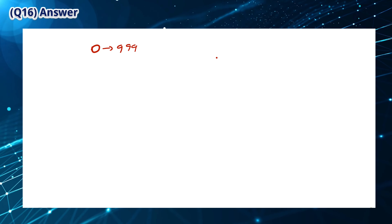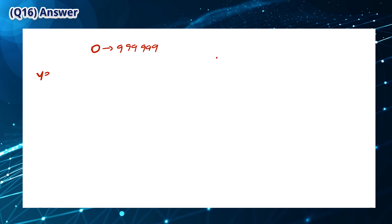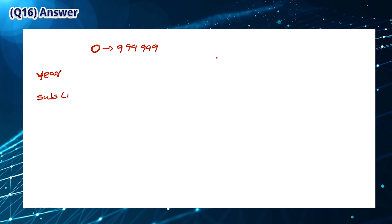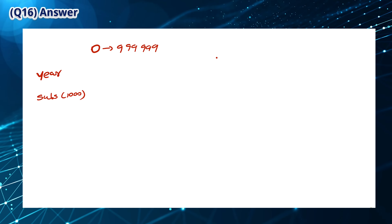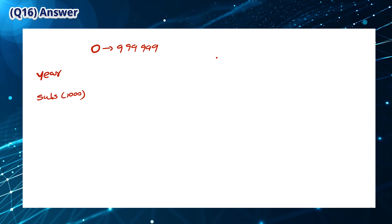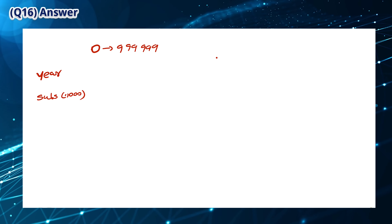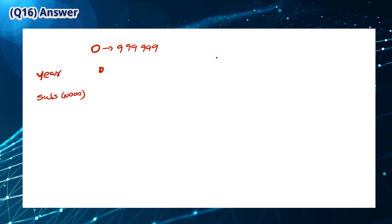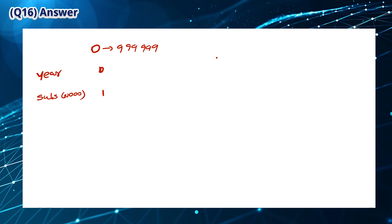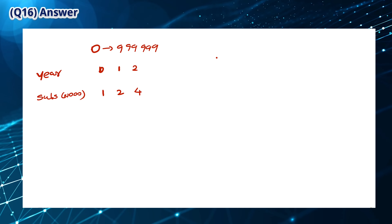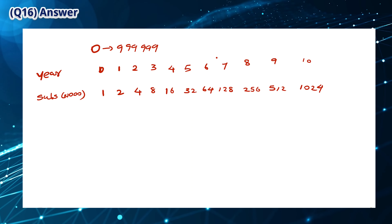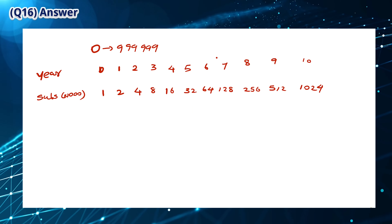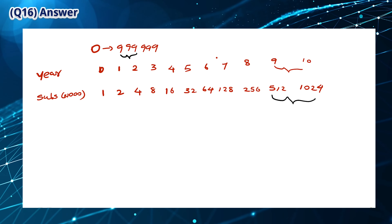We assume that subscriber numbers go from 0 to 999,999. This table is made by following the annual doubling until 1 million subscribers is passed. Starting with 1,000 subscribers, doubling each year, we reach 1,024,000 in the 10th year. So the phone numbers run out between 9 and 10 years from now. This means that the answer is B.